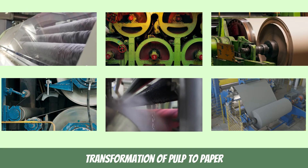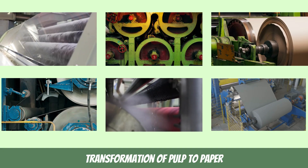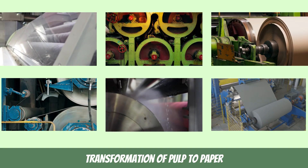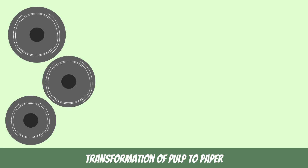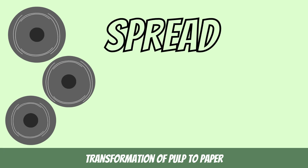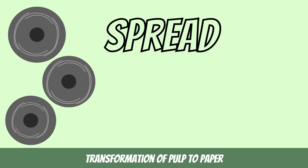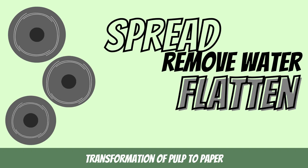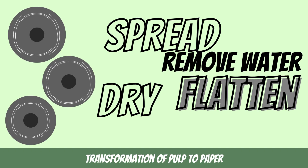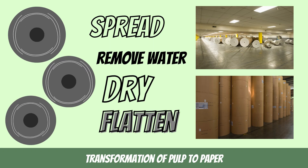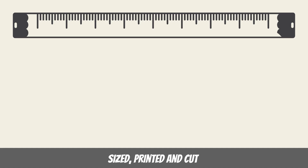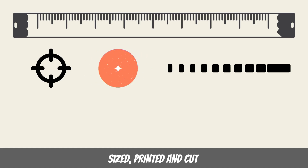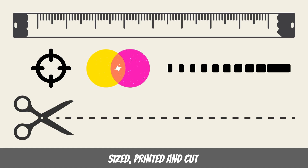Now we need to send the pulp through a series of rollers to make a solution of pulp into paper. The purpose of these many sets of rollers can be to spread the pulp, remove any excess water, flatten, smooth, and dry — and then to be wound into a huge roll of paper, ready to be sized, printed and cut for use.